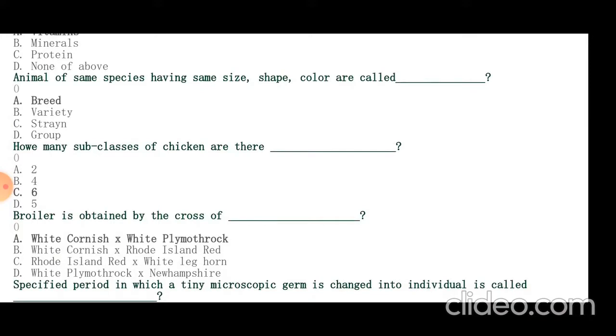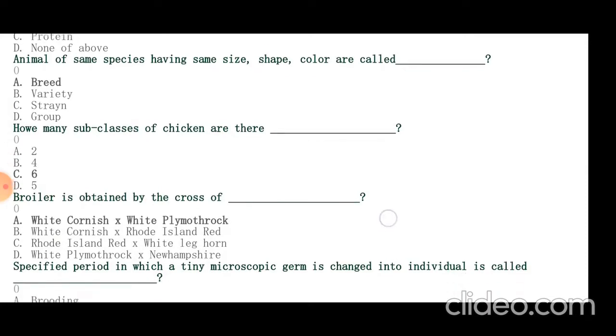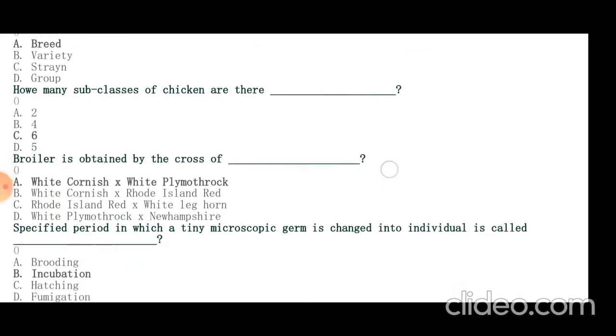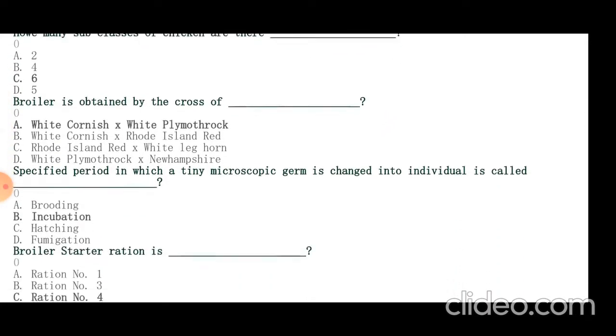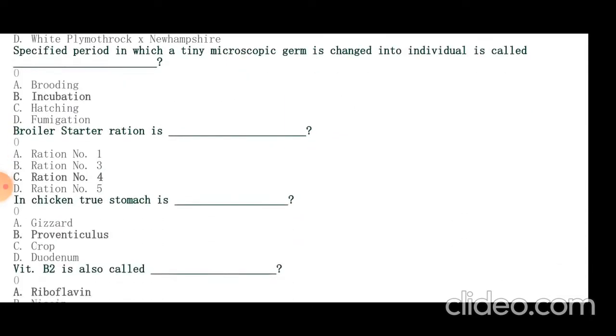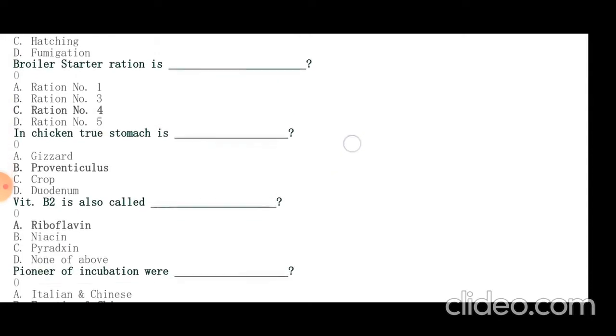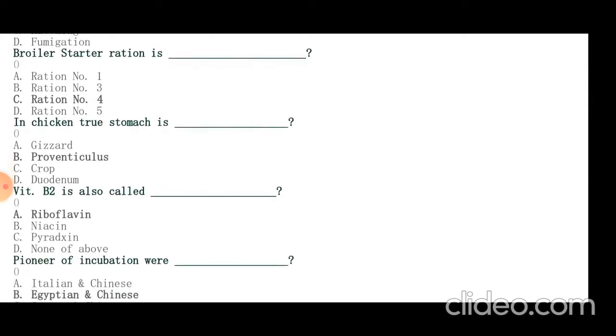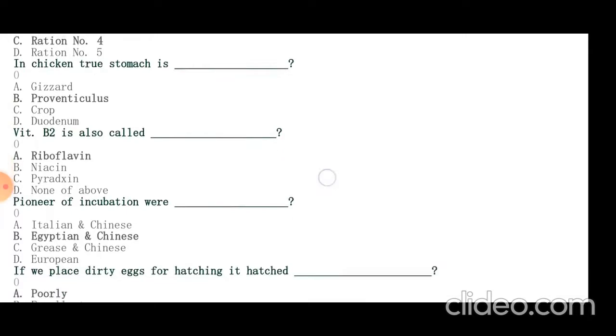Specified period in which a tiny microscopic germ is changed into individual is called incubation period. Broiler starter ration is ration number 4 in chicken. True stomach is proventriculus. Vitamin B2 is also called riboflavin. Pioneers of incubation were Egyptian and Chinese. If we place dirty eggs for hatching, they hatch poorly.